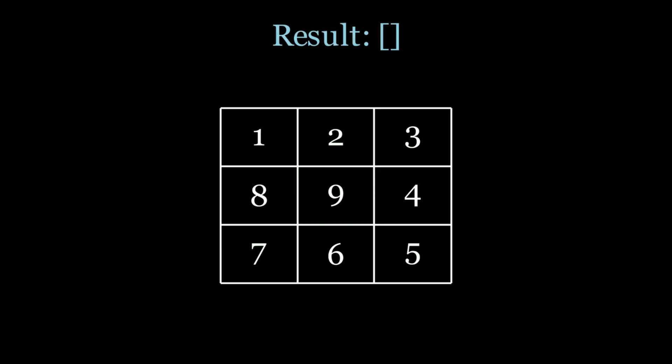So let's see how we would iterate through a matrix in spiral order. Spiral order is really just going through the perimeter starting from the top, then the right side, then the bottom row, then the left side, and then you're done. You have to repeat the process on a smaller perimeter.